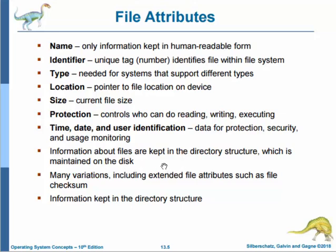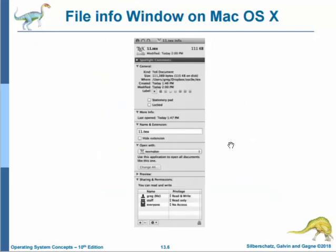The information about files is kept in the directory structure which is maintained on the disk. There are many variations of files and these include extended file attributes such as the file checksum. The information is always kept in the directory structure. From the figure, you will see an illustration of a file info window on a Mac operating system that displays file attributes. Windows also has these properties of the file that we can see.